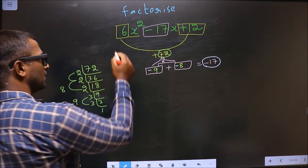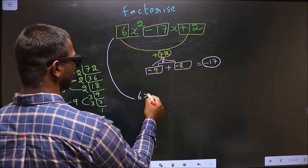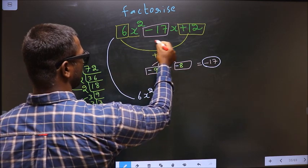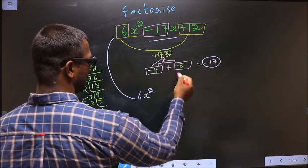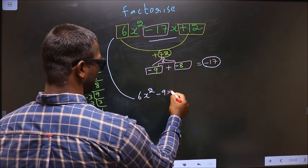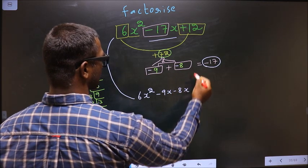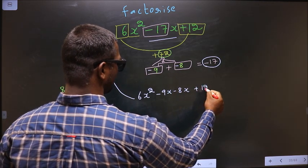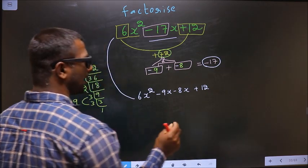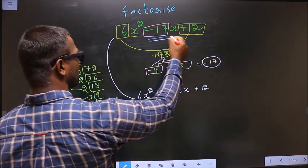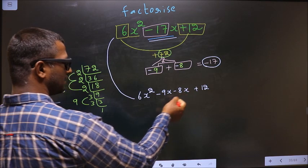Now you change this. In place of -17x now you write this: -9x - 8x + 12. Am I clear? In place of -17x I have written this.